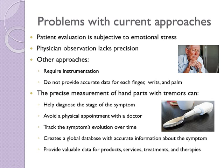Current hand tremor measurement approaches have problems such as subjectivity, lack of precision and poor data accuracy. There are many benefits from the precise measurement of hand and finger tremor, including faster and easier diagnosis of the disease stage and tracking of the symptom over time.